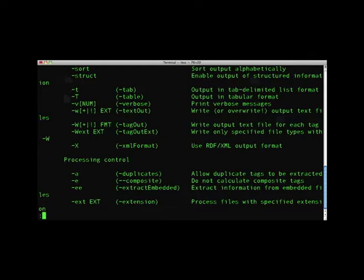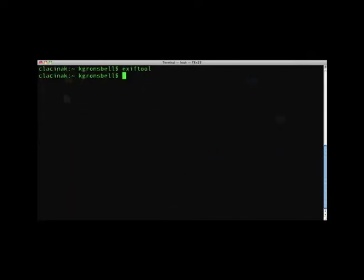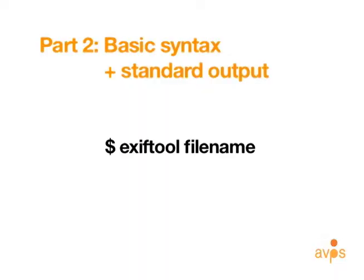To exit, simply hit the Q key and you are back at the command prompt. Eventually we will add options and other parameters, but for now let's look at EXIFTOOL's standard output, or what is printed to the terminal if no options are written in the command. The syntax is outlined here, with the name of the tool followed by a filename.